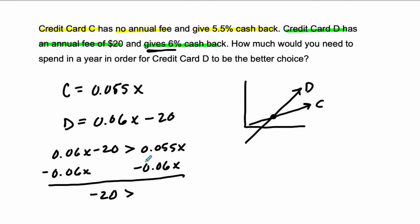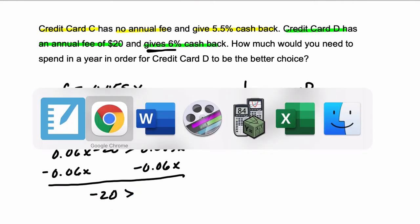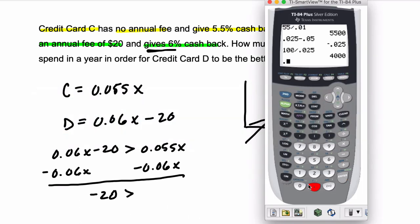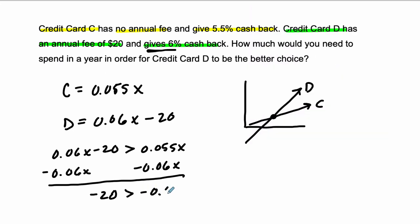And then I get negative 20, that negative sign stays there, is greater than this amount, which is 0.055 minus 0.06, which is negative 0.005, negative 0.005X.